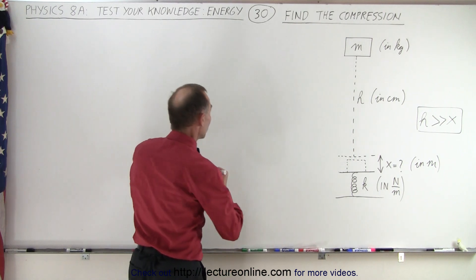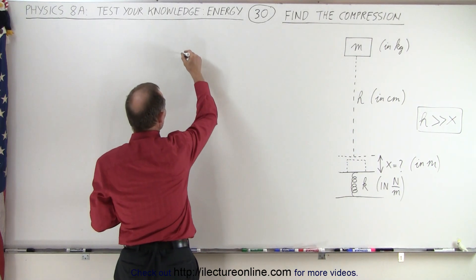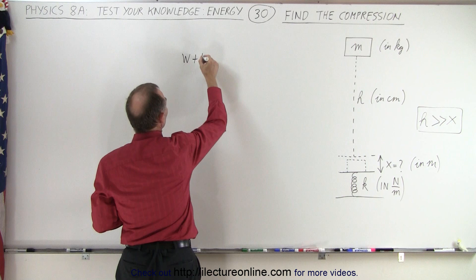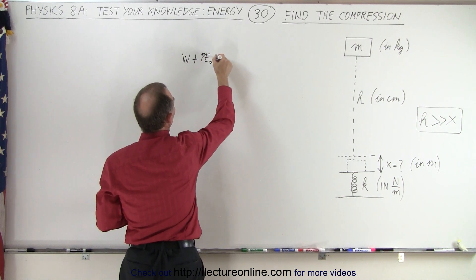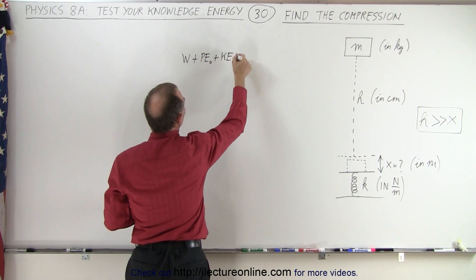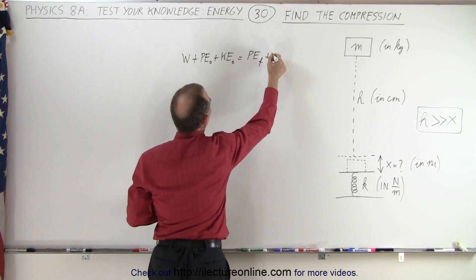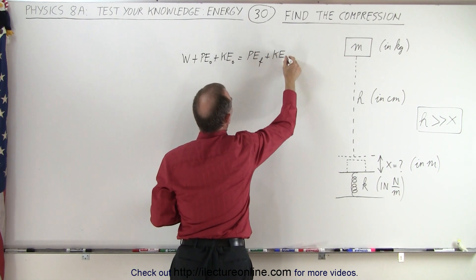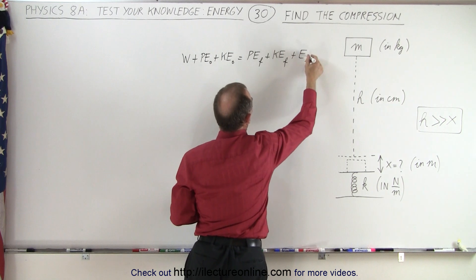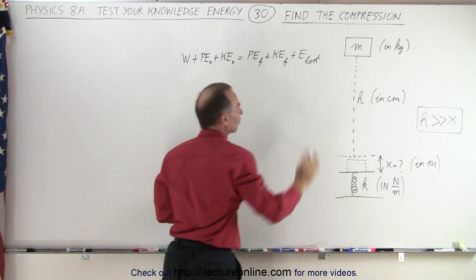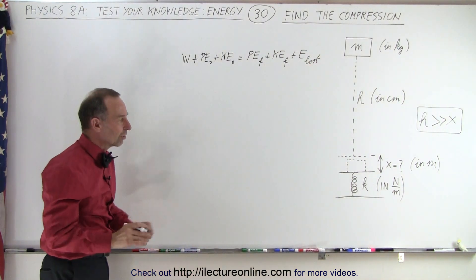Now we're going to use the equation we normally use, which is the energy conservation equation: work plus the original potential energy, plus the original kinetic energy, equals the potential energy final, plus kinetic energy final, plus any energy lost. In this case, we're not going to lose any energy, we ignore energy loss in the collision.